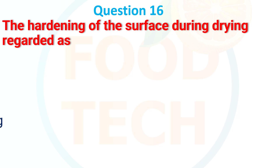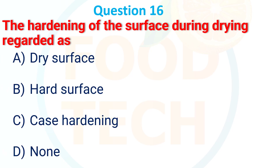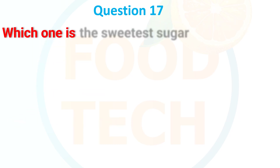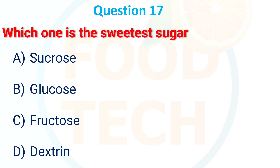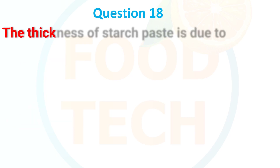The hardening of surface during drying is regarded as: a) dry surface, b) hard surface, c) case hardening, d) none. The answer is case hardening. Which one is the sweetest sugar? a) sucrose, b) glucose, c) fructose, d) dextrose. The answer is c) fructose.